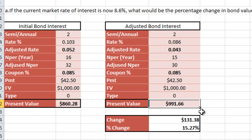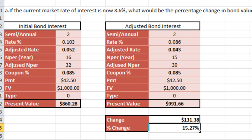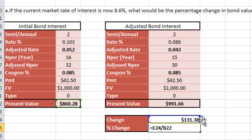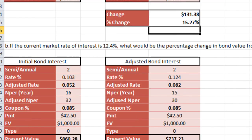The change that has occurred between these values — we simply subtract the previous one from the current one — gives us a difference of $131.38. To find the percentage change, we take this change of $131.38 and divide it by the previous value, giving us a percentage change of 15.27%.